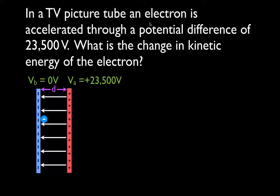We have a picture tube. It has an electron, and through that picture tube, an electron is going to be accelerated through a potential difference of 23,500 volts. We want to know what is the change in kinetic energy of that electron as it moves from this potential to this higher potential of 23,500 volts.